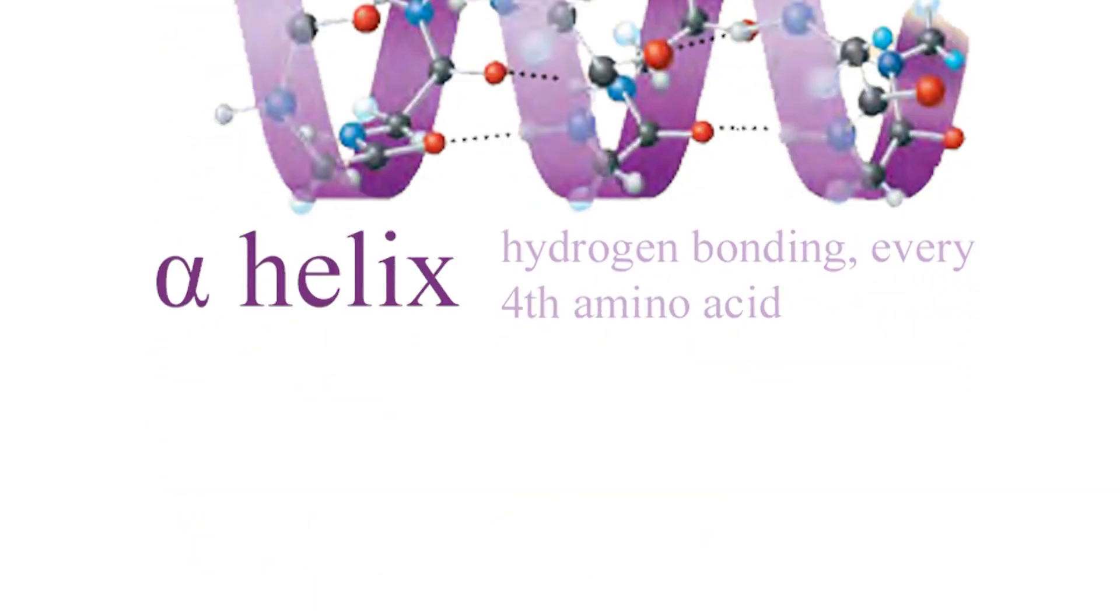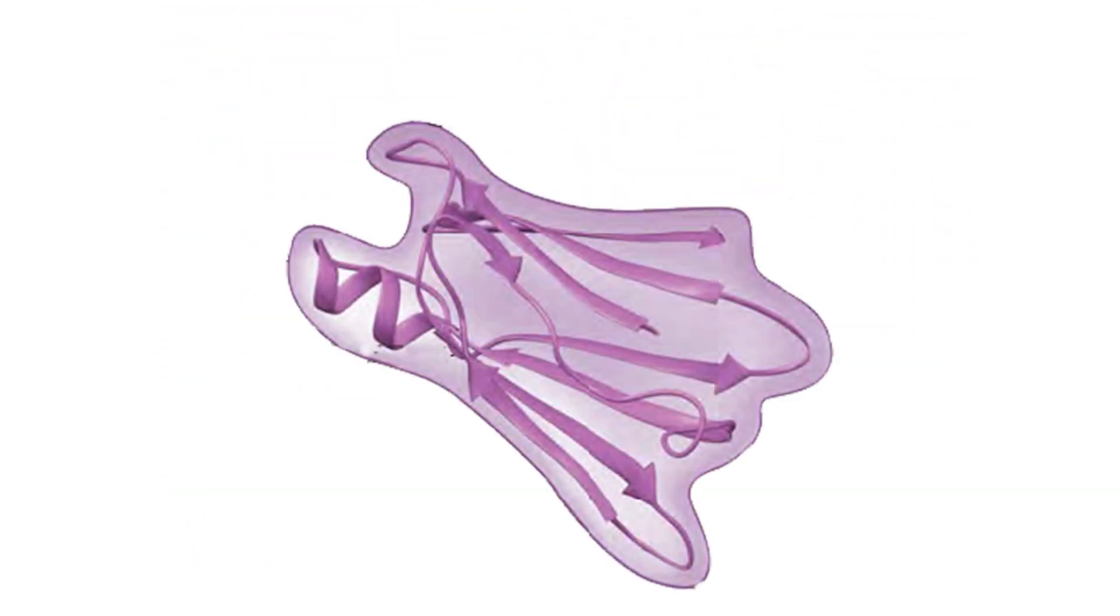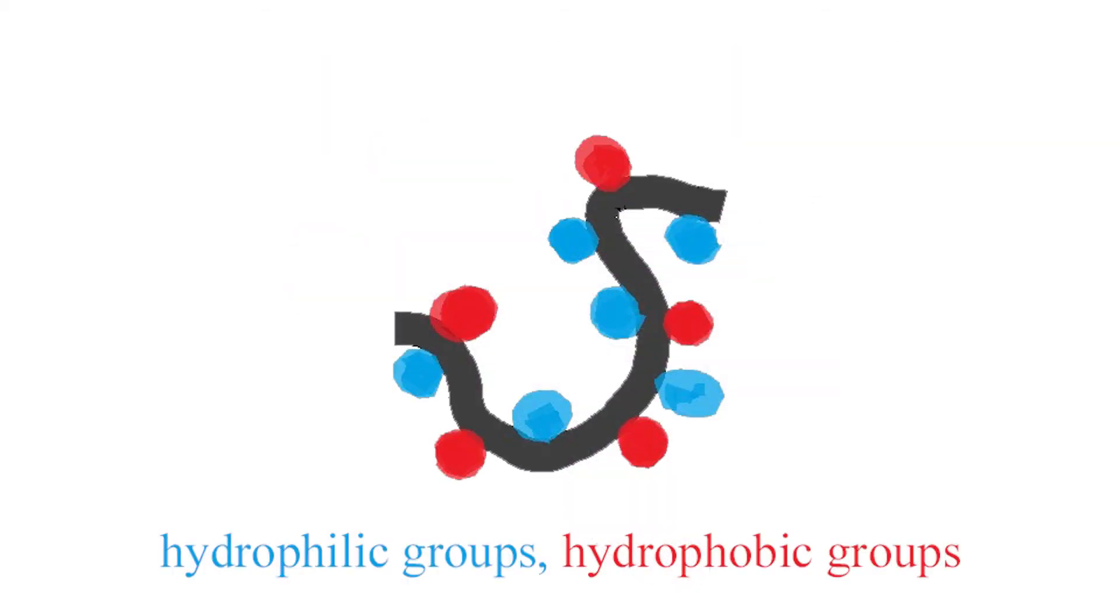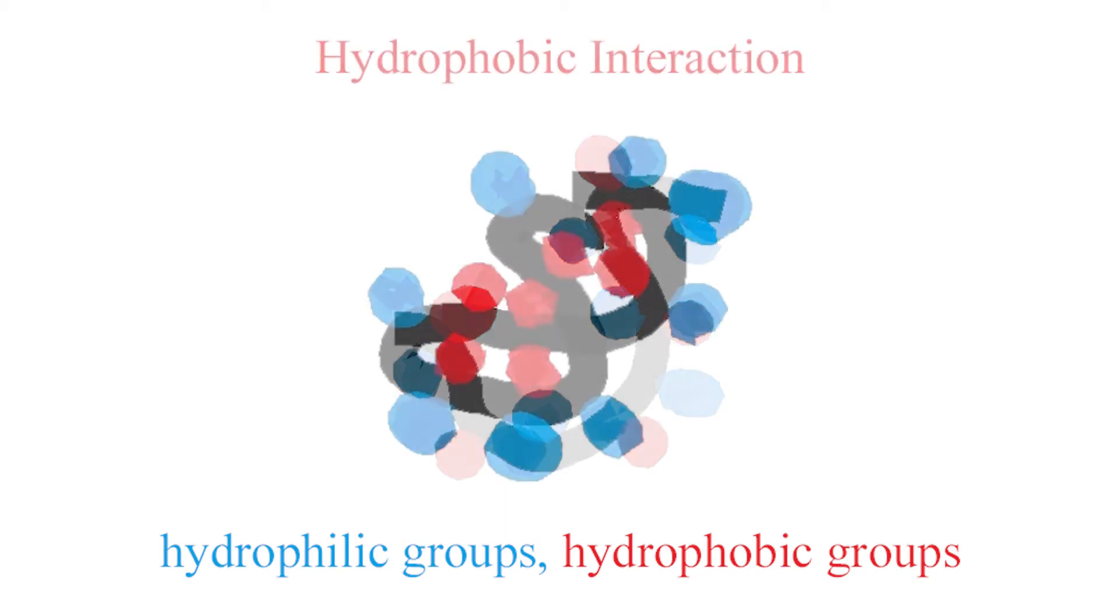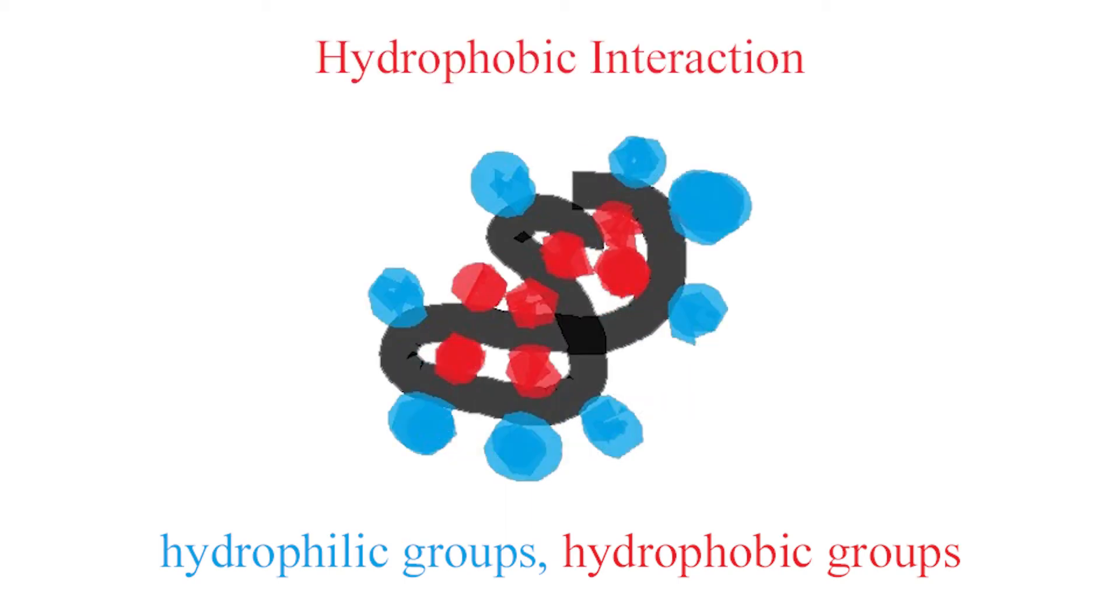Tertiary structure describes how polypeptides fold into three-dimensional shapes due to interactions with side chains, or R-groups. An example of tertiary structure would be hydrophobic interaction. As a polypeptide folds, amino acids with hydrophobic side chains cluster up at the core of the protein.